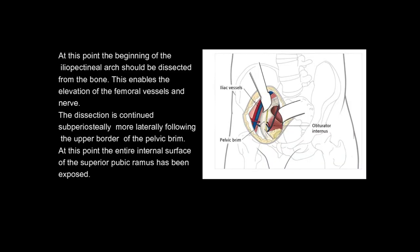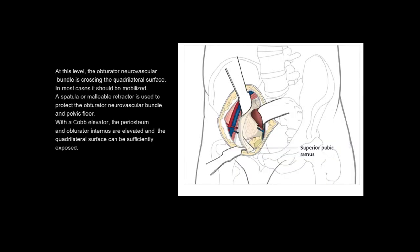At this point, the beginning of the iliopectineal arch should be dissected from the bone. This enables the elevation of the femoral vessels and nerve. The dissection is continued subperiosteally more laterally, following the upper border of the pelvic brim, until the entire internal surface of the superior pubic ramus has been exposed. At this level, the obturator neurovascular bundle is crossing the quadrilateral surface and in most cases should be mobilised. A spatula or malleable retractor is used to protect the obturator neurovascular bundle and pelvic floor. With a cob elevator, the periosteum and obturator internus are elevated and the quadrilateral surface can be sufficiently exposed.